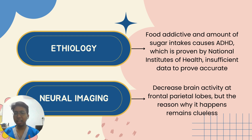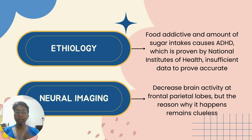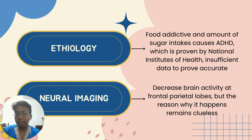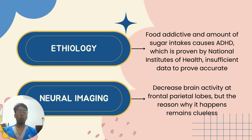The second theory is neural imaging, which shows a decreased brain activity at the frontal and parietal lobes. Even though researchers have detected this decrease in brain activity in that area, the reason why it happens remains unknown.